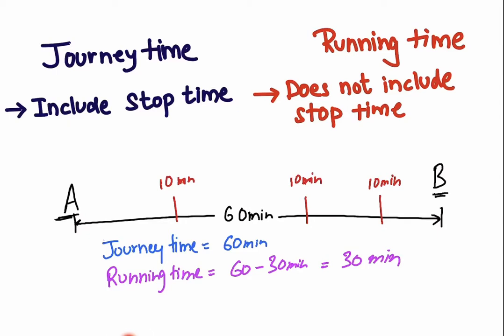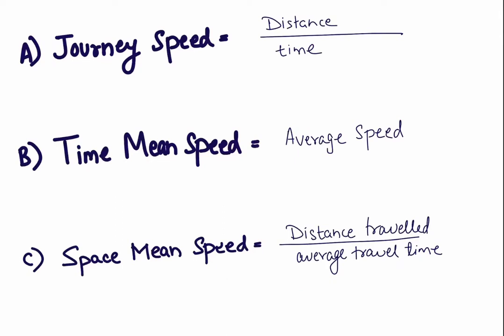Journey speed is simply distance divided by time — our normal speed formula. Time mean speed is the average of journey speeds. By formula, time mean speed is the summation of (d/t) divided by n, where d is distance, t is time, and n is the number of speed runs taken into account.